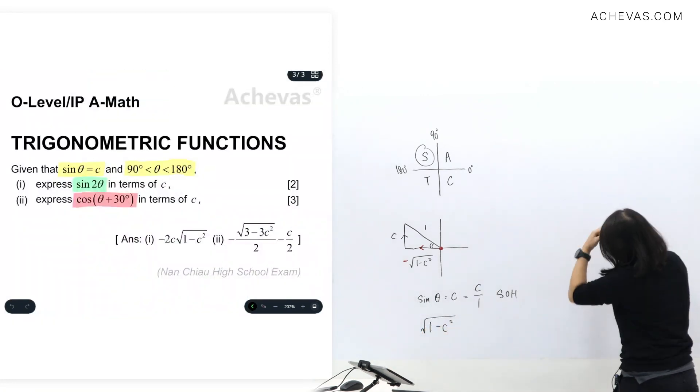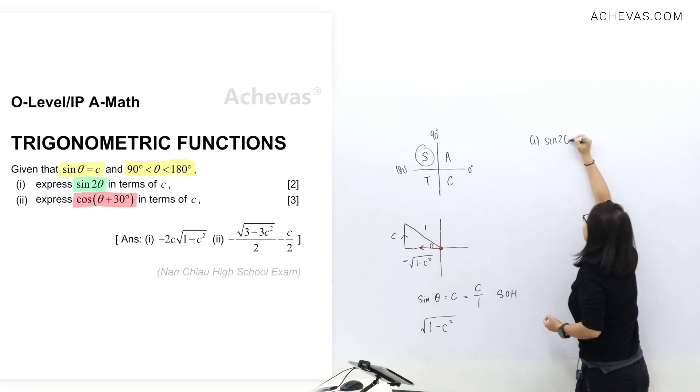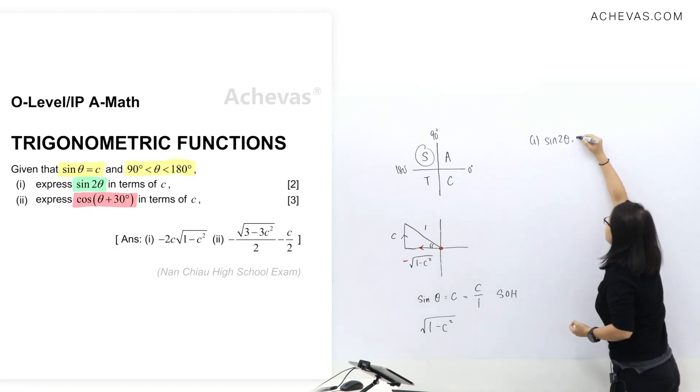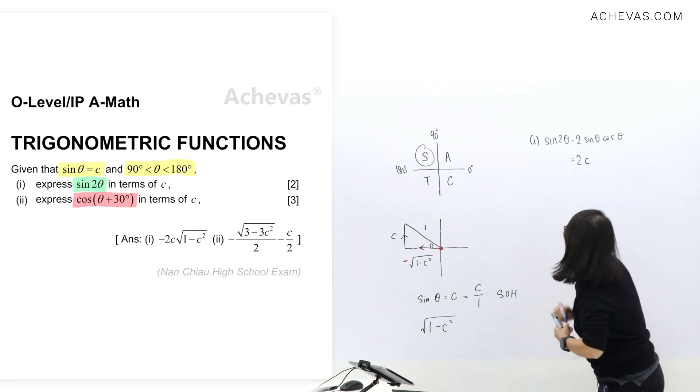We have part 1. I'm going to do sine 2 theta. So I'm going to apply the formula. That's going to be 2 sine theta cos theta. And sine theta, I'll have this c value. I'm just going to write down. How about this cos theta here?